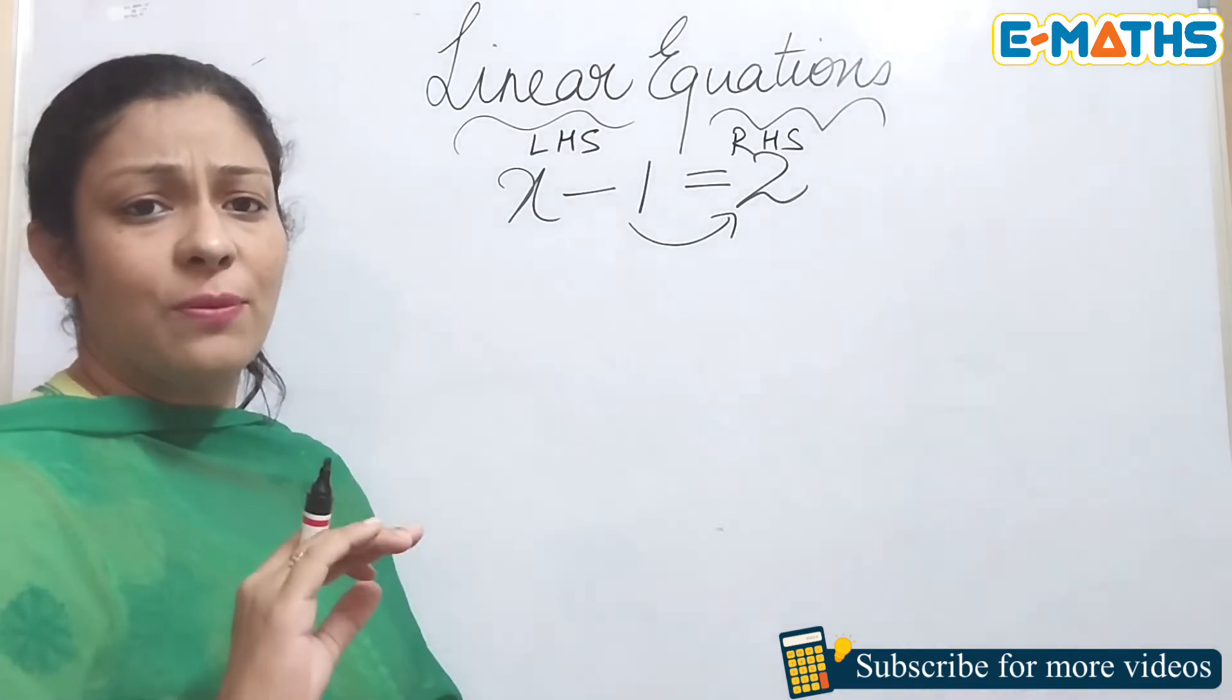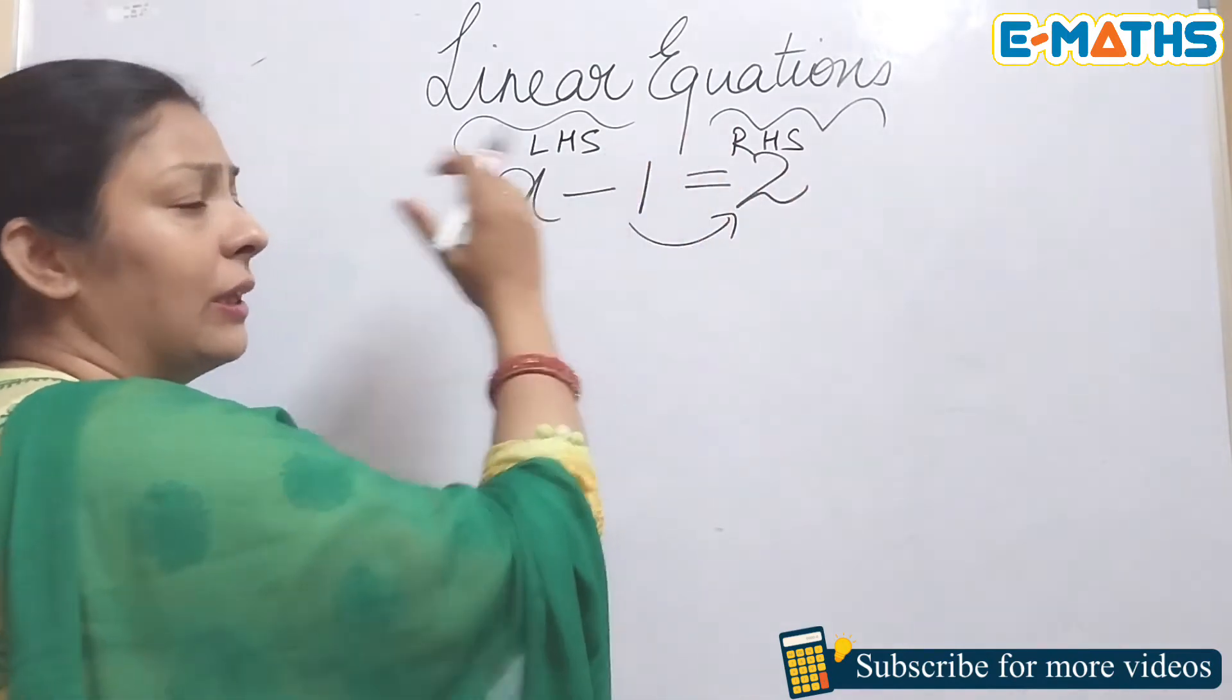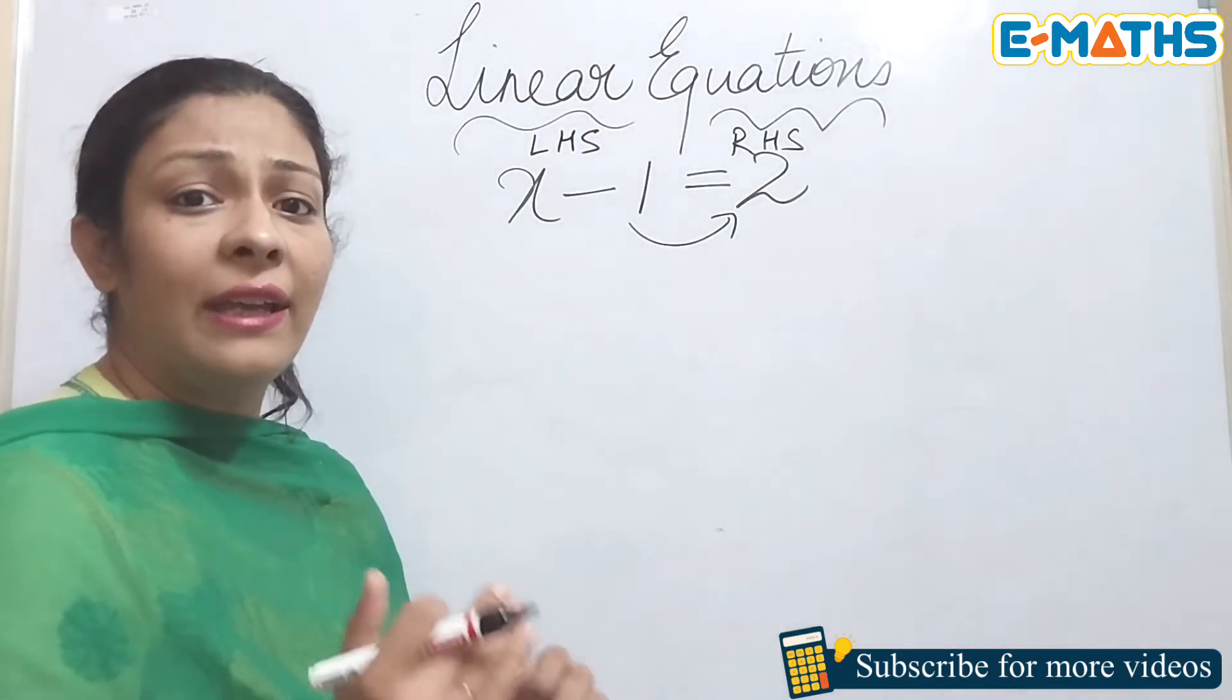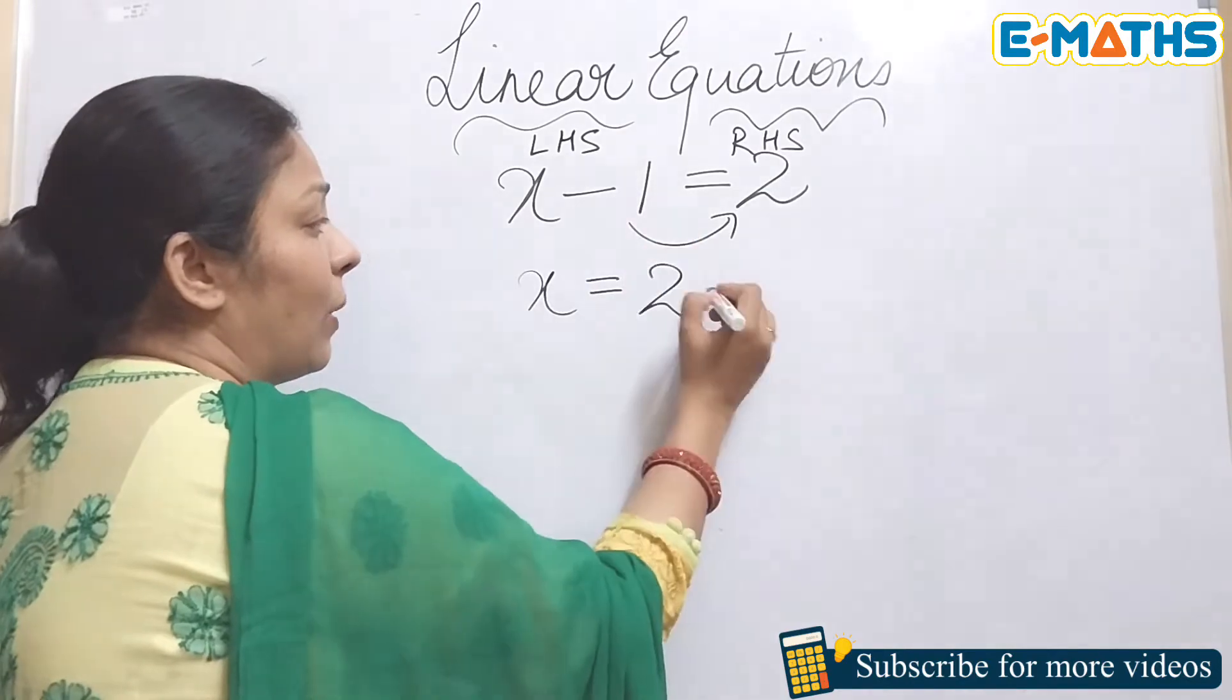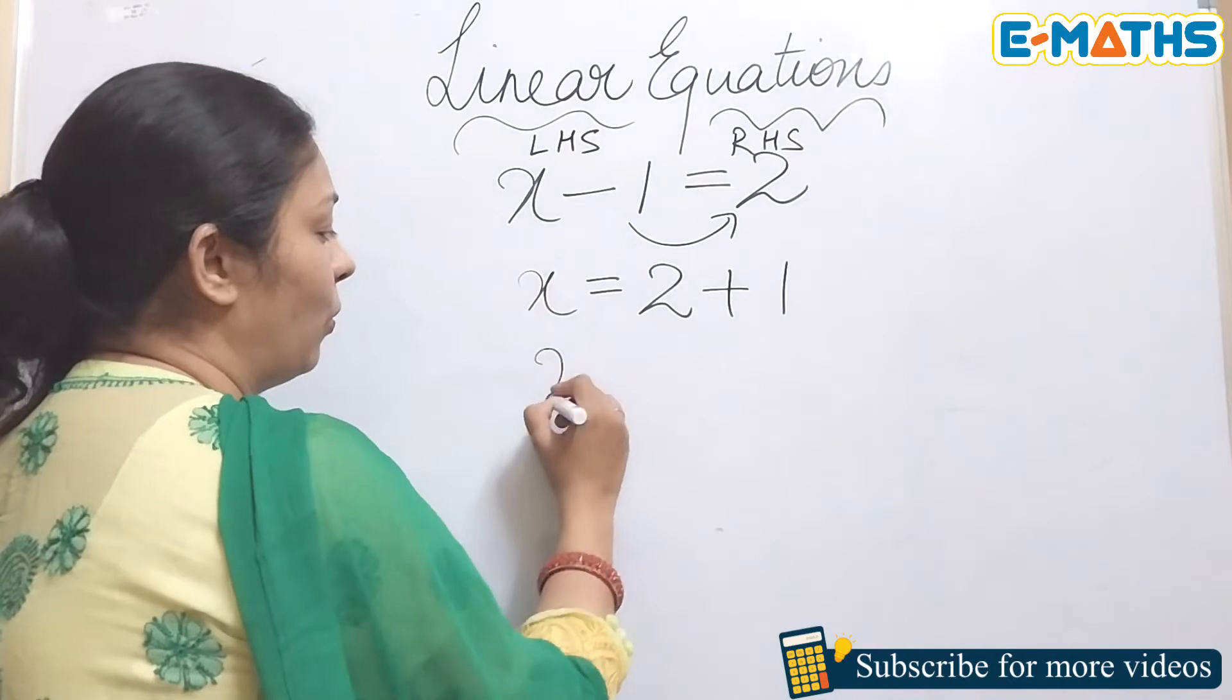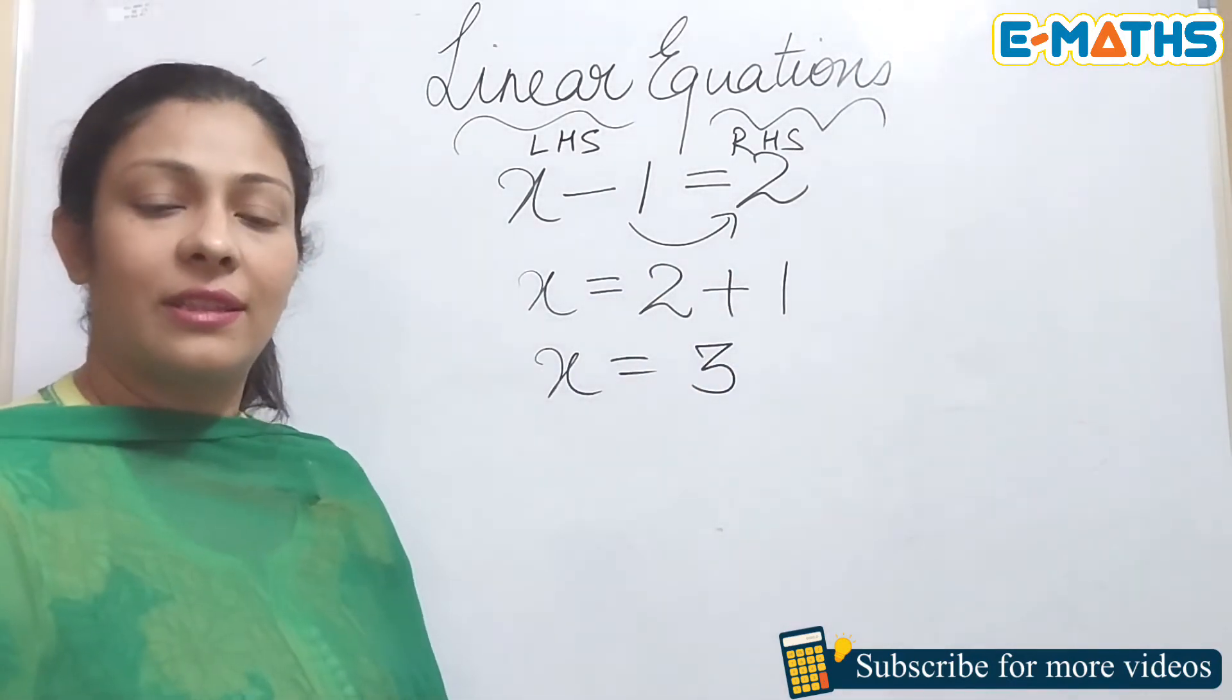Whatever term you are transposing on the other hand side, whether you're bringing any term from this side to LHS or from LHS to RHS, you just need to see that the sign is getting changed. So if I'm transposing this one on the other hand side, this one will have a plus sign on the RHS. Now we can simply solve it and we get the value of x as 3.